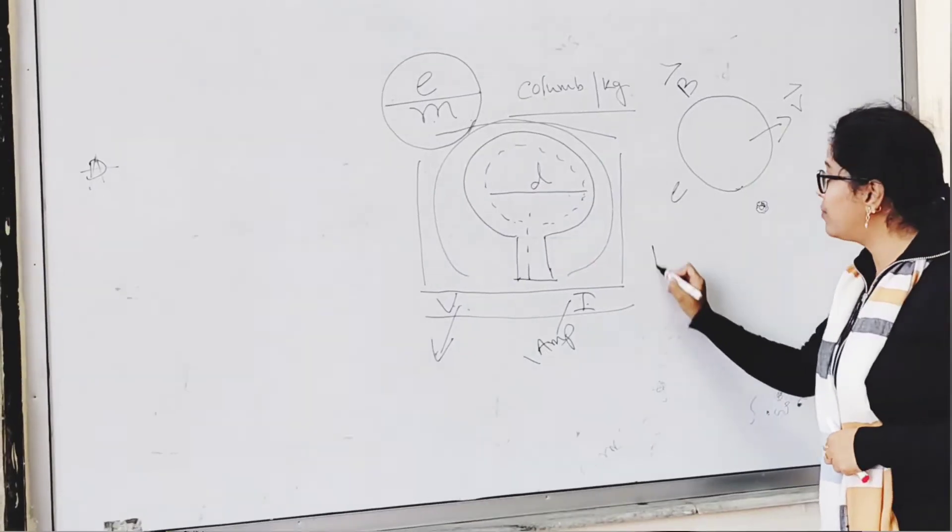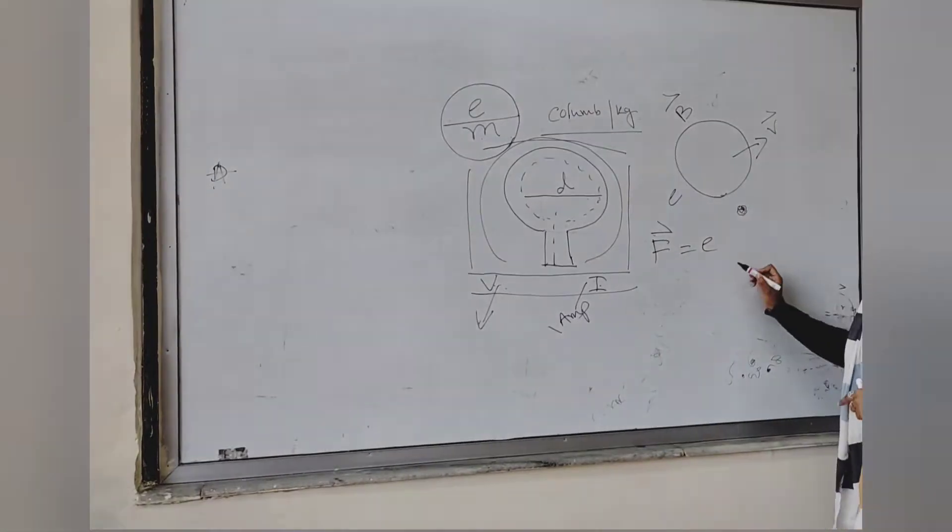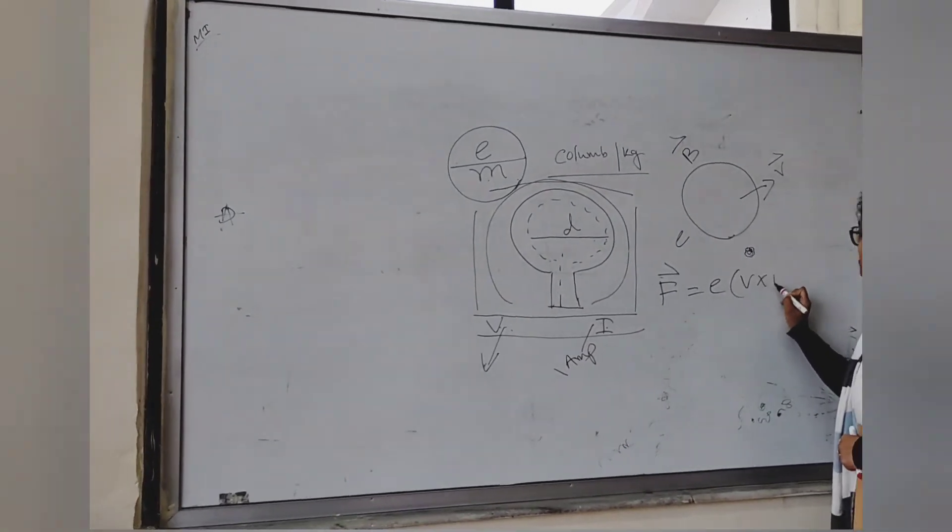So now how to find that force? The Lorentz force is equals to e dot V cross B.